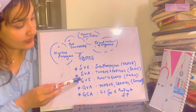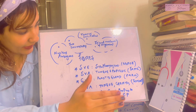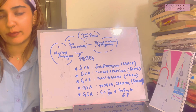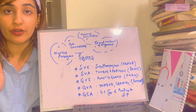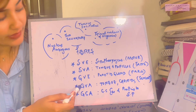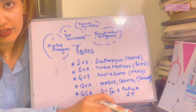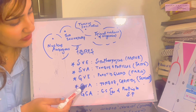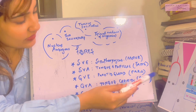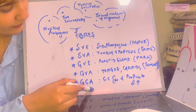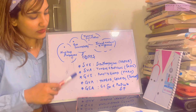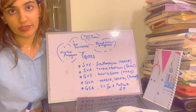The general visceral efferent fibers supply the parotid gland — the ninth nerve supplies secretomotor parasympathetic fibers to the parotid gland via the otic ganglion. The general visceral afferents are sensory fibers taking sensation from the tongue, tonsil, carotid sinus, and carotid body to the brain. Finally, the general somatic afferents bring general sensation from the ear and proprioceptive fibers from the stylopharyngeus muscle.